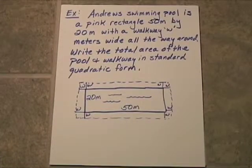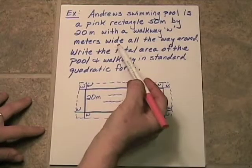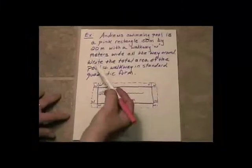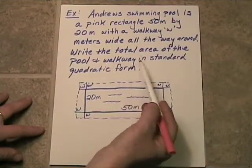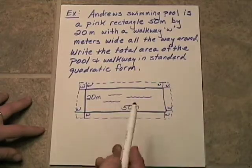Andrew's swimming pool is a pink rectangle, 50 meters by 20 meters, with a walkway w meters wide all the way around the pool. Write the total area of the pool and walkway in standard quadratic form.